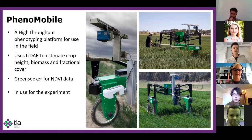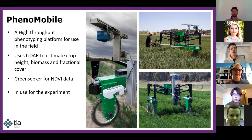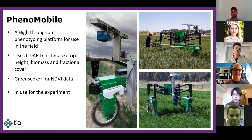Also being used over the experiment was a phenotyping platform called the phenomobile. It captures 3D point cloud data using a LIDAR sensor to estimate crop traits which are normally really time consuming to measure. For each plot, average values for crop height, above-ground biomass, and fractional cover are recorded simultaneously in a matter of seconds at walking pace. It also records NDVI with a green seeker to give an indication of basic plant health and an easy value for comparison between plots. I did briefly get to drive it, but not over the crop, just back to the trailer.